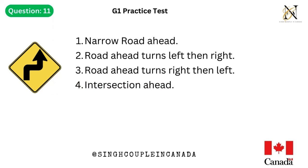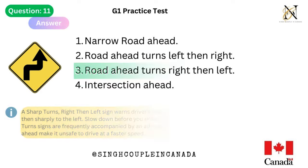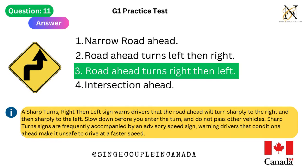Question 11. This traffic sign means: 1. Narrow road ahead. 2. Road ahead turns left then right. 3. Road ahead turns right then left. 4. Intersection ahead. Answer is 3. Road ahead turns right then left. A sharp turns right-then-left sign warns drivers that the road ahead will turn sharply to the right and then sharply to the left. Slow down before you enter the turn and do not pass other vehicles. Sharp turn signs are frequently accompanied by an advisory speed sign, warning drivers that conditions ahead make it unsafe to drive at a faster speed.